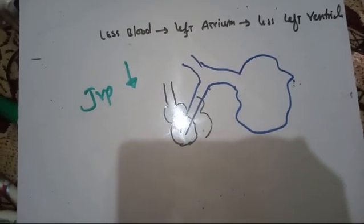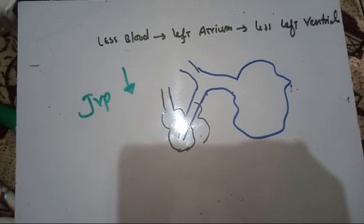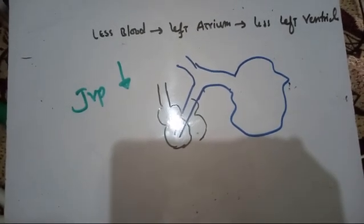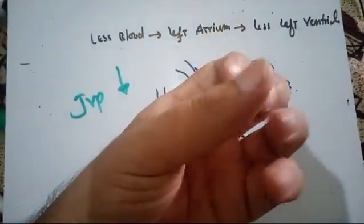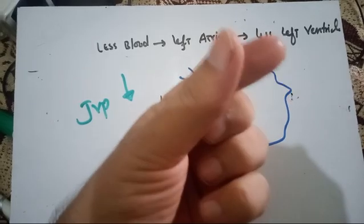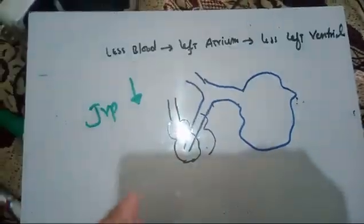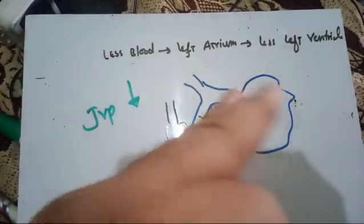Blood flow to the lungs during inspiration is increased. During expiration, the reverse process occurs: all these things are reversed. The pulmonary parenchyma contracts, the lung contracts, the vessels inside the lung also contract, resistance inside the vessels increases, and there is less blood flow coming to the lungs. During inspiration, blood flow to the lungs is increased; during expiration, blood flow to the lungs is decreased.